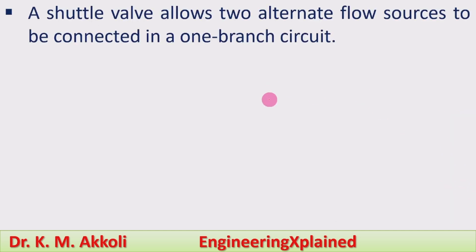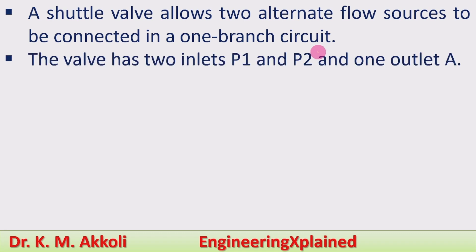Then how the working is taking place, we can see here. A shuttle valve allows two alternate flow sources to be connected in a one-branch circuit. The valve has two inlets, P1 and P2, and one outlet A.